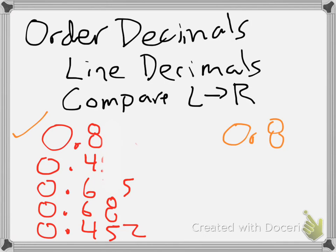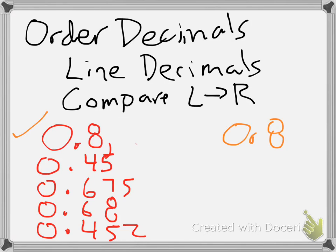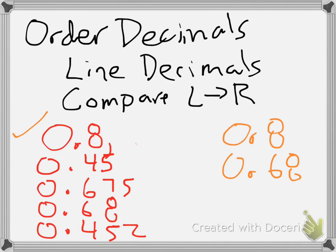I already know the 0s are the same so I don't have to do that again. Now looking at my next digits, I can see I've got two numbers that have 6s next to them and two numbers that have 4s next to them. Going from greatest to least, I'll focus on those two numbers with 6s. Moving one more space, I'm looking at 6, 7 and 6, 8. So my next largest number is 0.68, and then 0.675.